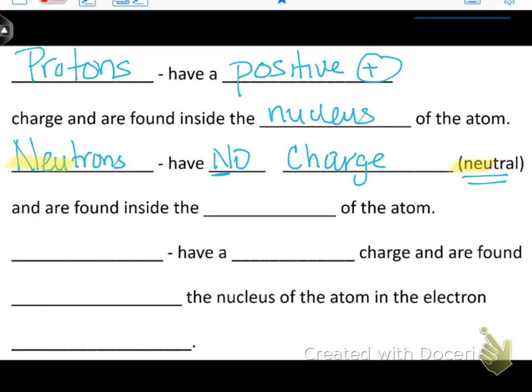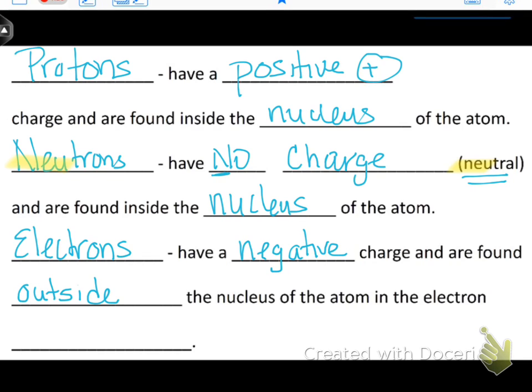So, neutrons have no charge, which means they're neutral, and they're found inside the nucleus of the atom. Electrons have a negative charge and are found outside the nucleus of the atom. And they're found in this place called the electron cloud. And we'll talk about that towards the end when we label it.